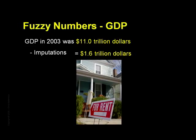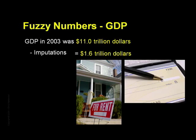Did you follow that? If you own your house, the government adds how much they think you should have been paying yourself in rent to live there, and adds that amount to the GDP. Another imputation is the benefit you receive from free checking provided by your bank, which is imputed to have a value because if it weren't free, you'd have to pay for it. So that value is guesstimated and added to the GDP as well. Together, just these two imputations add up to over a trillion dollars of our reported GDP.